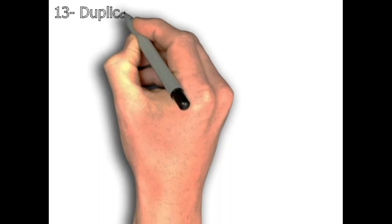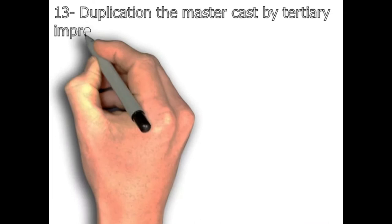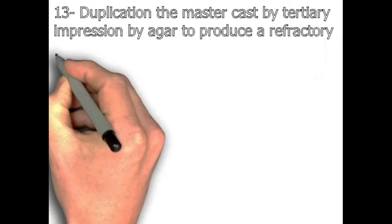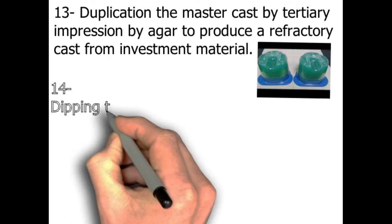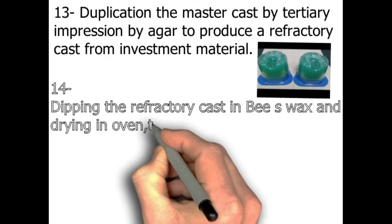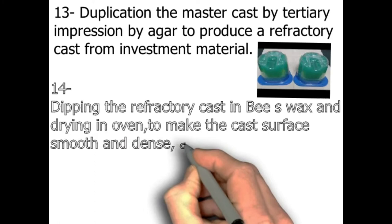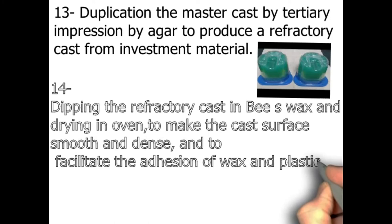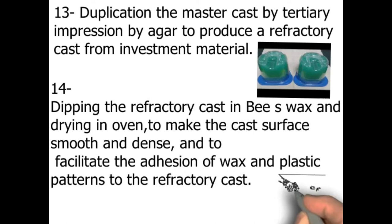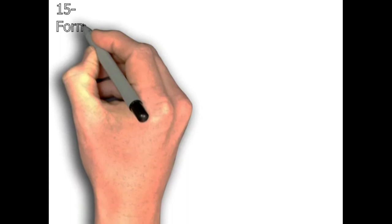Step number thirteen: duplication of the master cast by tertiary impression using agar-agar to produce a refractory cast from investment material — that's a laboratory step. Step number fourteen: dipping the refractory cast in beeswax and drying in an oven to make the cast surface smooth and dense, and to facilitate the adhesion of wax and plastic patterns to the refractory cast — that's a laboratory step.